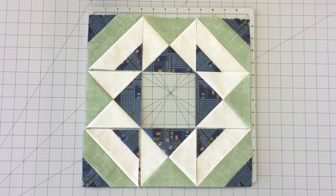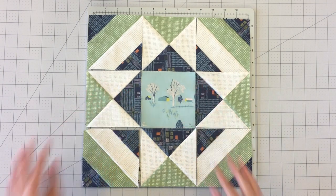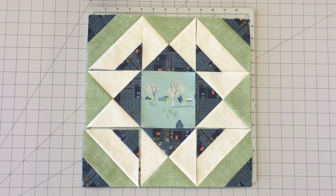Place all your pieces out as they should be sewn. Sew row one through three together, pressing seams in alternating directions. Your Jack Knife Block is complete.